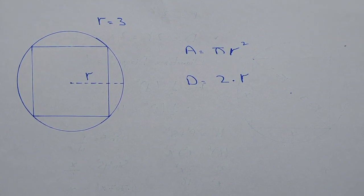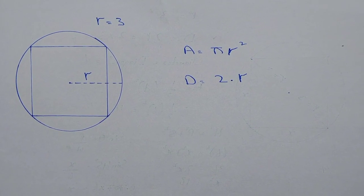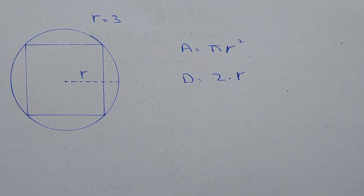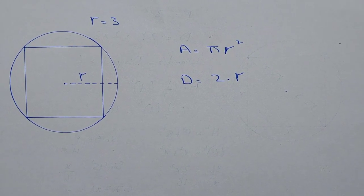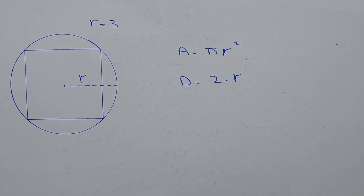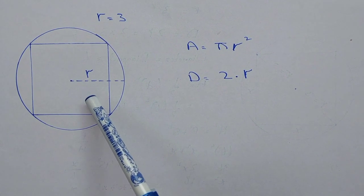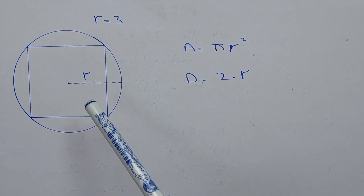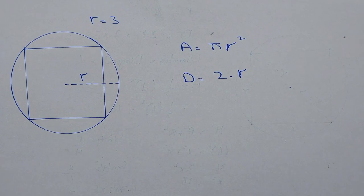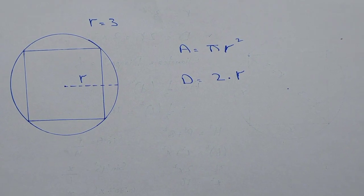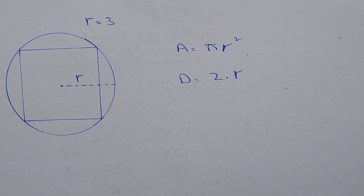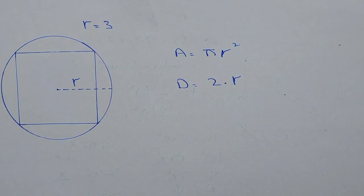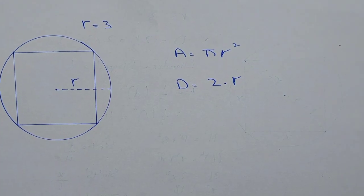Hello, what's up guys, welcome to the new video. In this video we have to learn how to find out the area of a square inside a circle. So let's suppose this is the square and this is the circle, and we have to find out the area of the square. One thing is given: the radius of the circle, which is 3. You may give any dimension to it — centimeters, meters, or whatsoever.